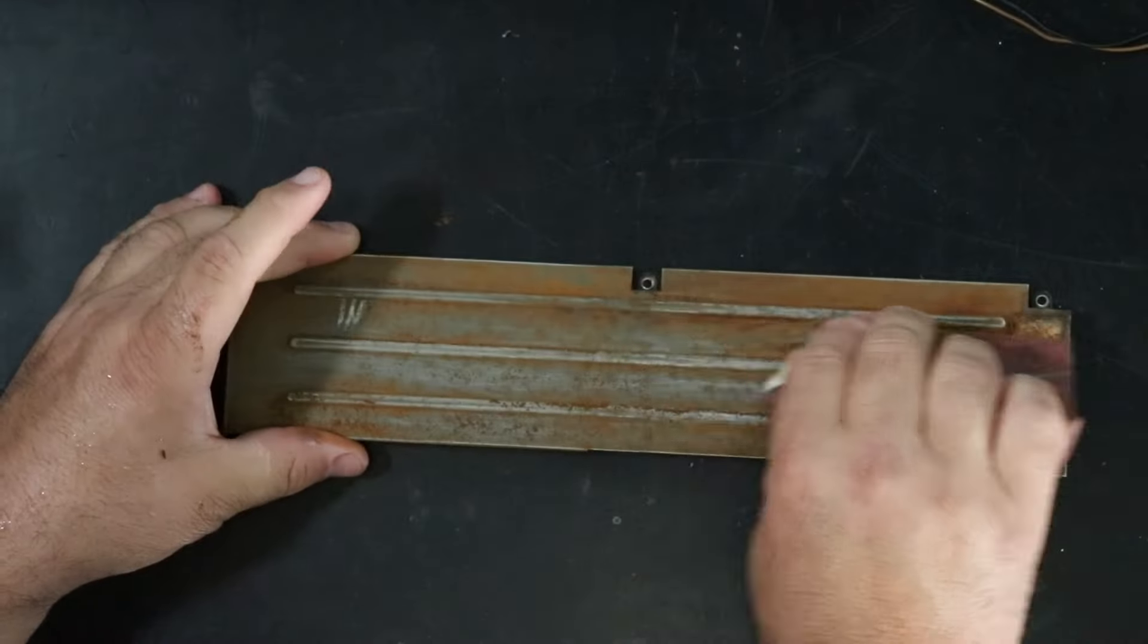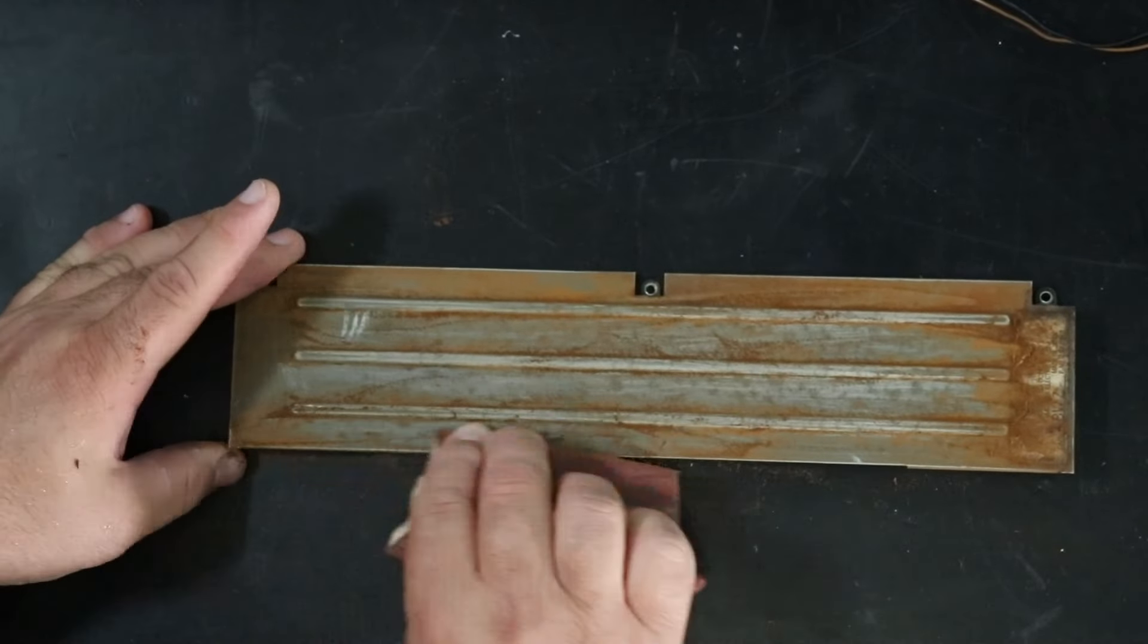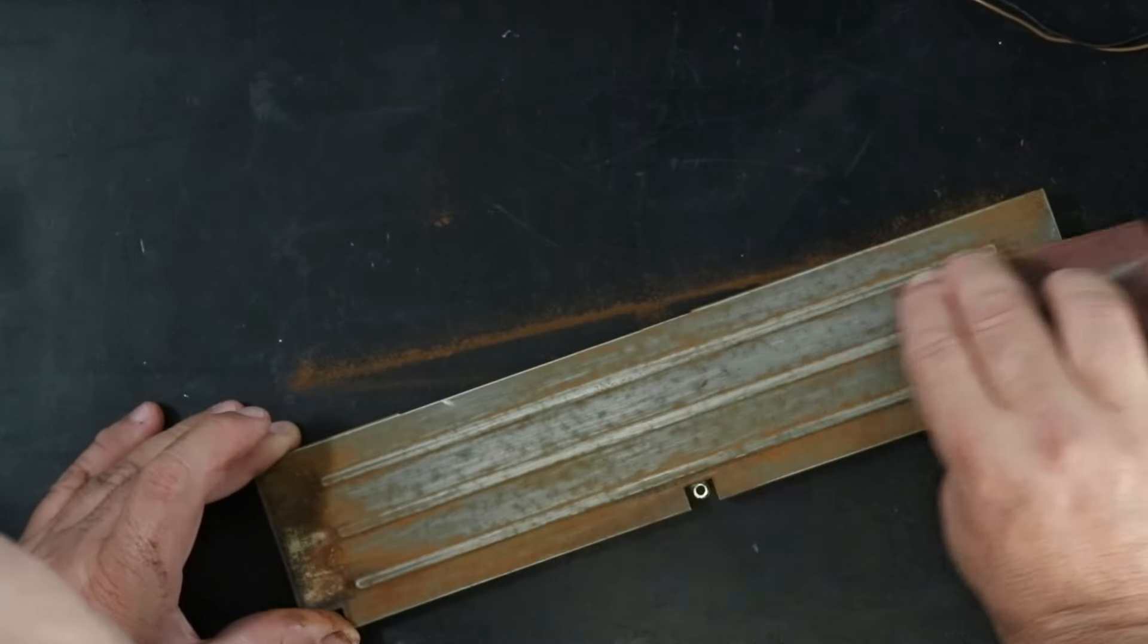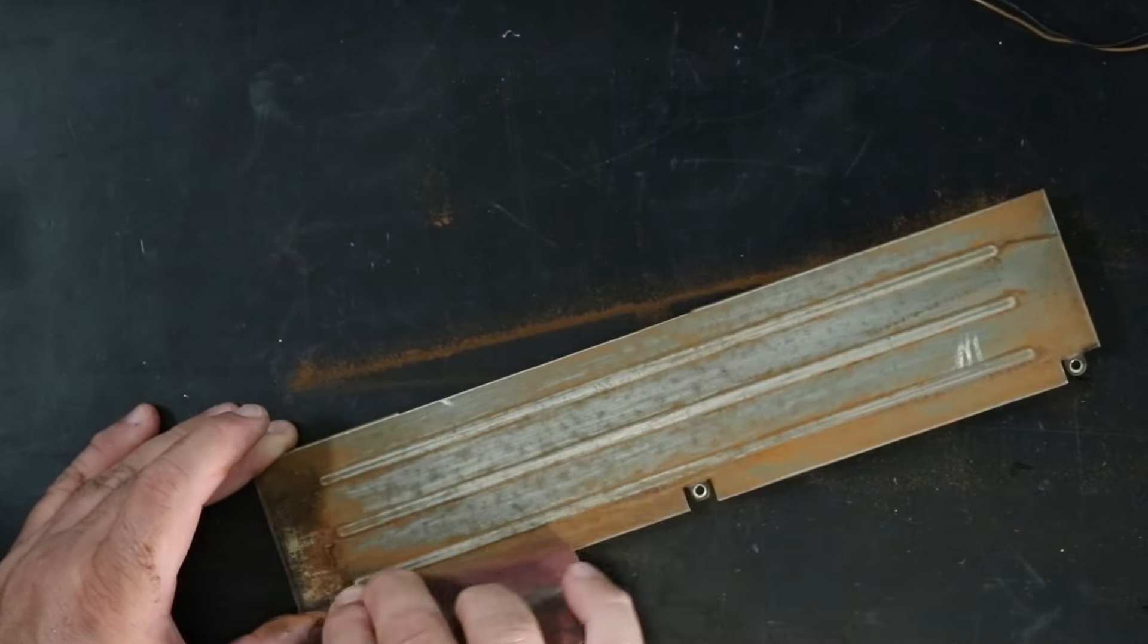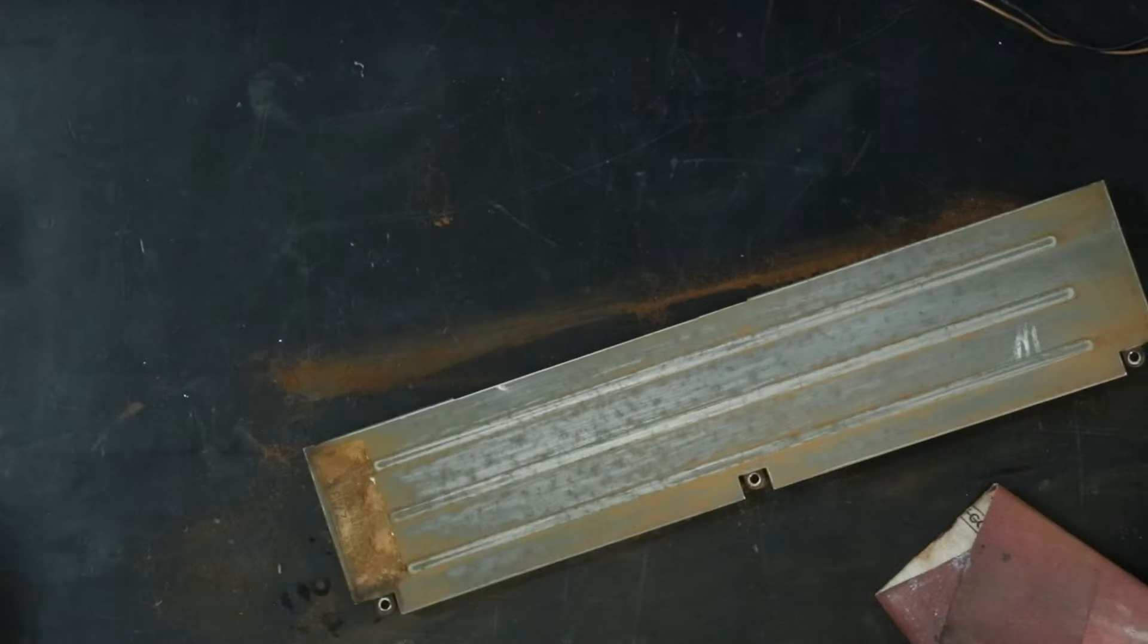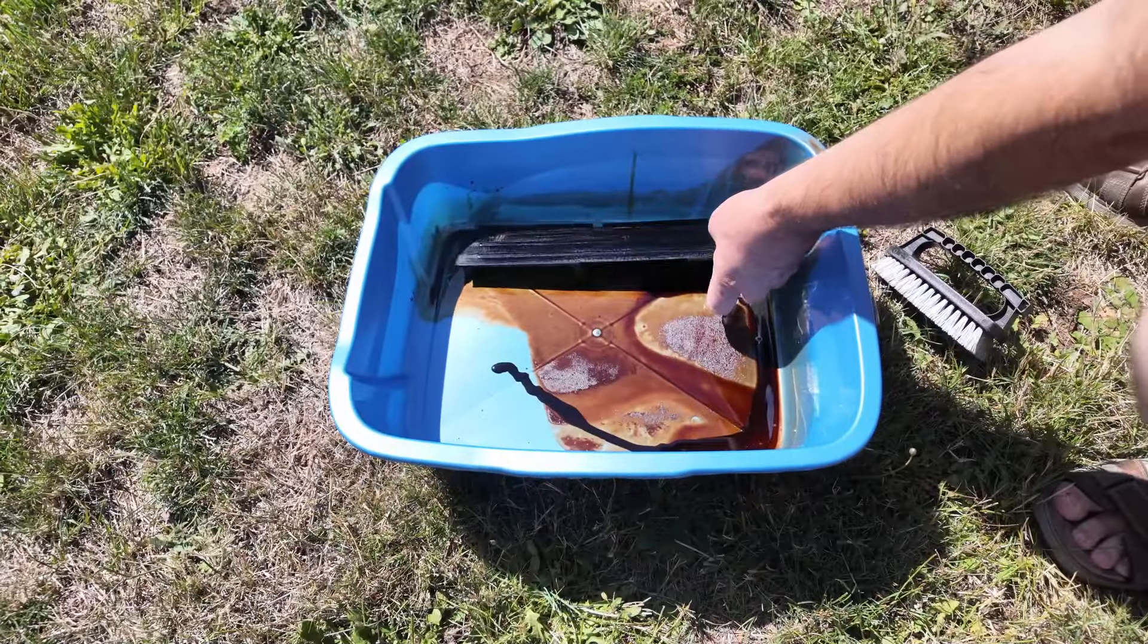To deal with the extreme rust on the RF shield, I really don't have any choice but to go with the last resort and paint it. My method of dealing with extreme rust like this is to first sand as much of the surface rust off as I can with fine sandpaper. In this case I'm using a 220 grit. Once the piece feels smooth to the touch, it's cleaned with soap and water followed by alcohol to ensure there is no grease or oils which would interfere with the next step.